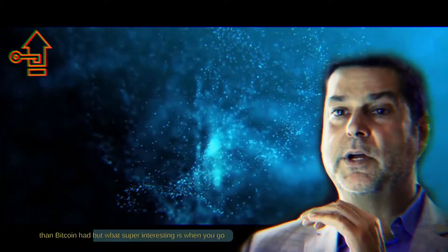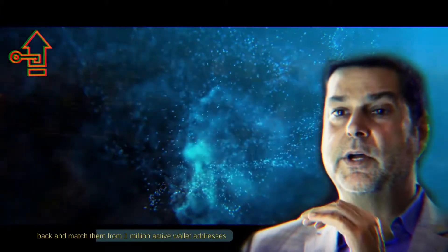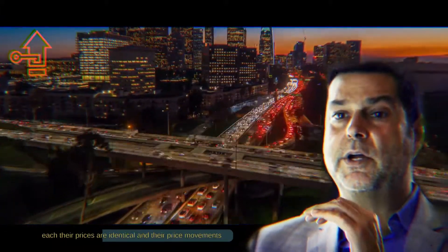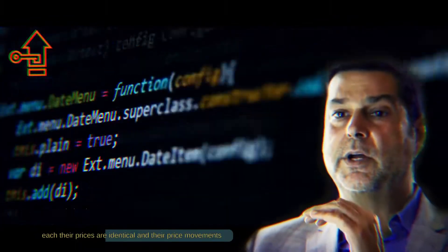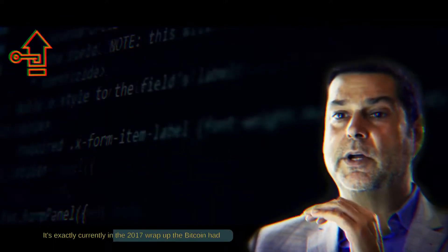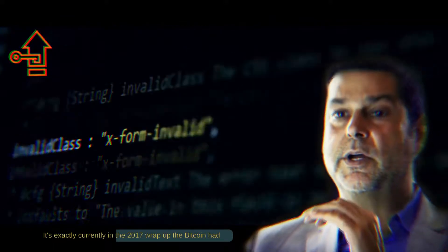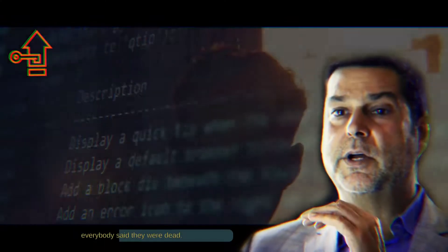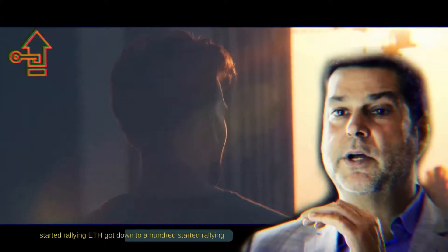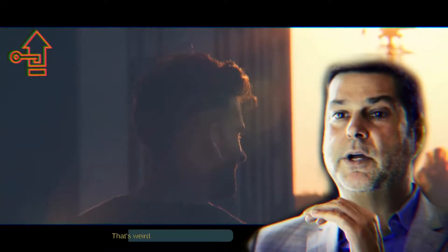But what's super interesting is when you go back and match them from 1 million active wallet addresses each, their prices are identical and their price movements have been identical. It's exactly currently in the 2017 wrap-up that Bitcoin had. Everybody said they were dead, they were worthless. Bitcoin got down to about 100 and started rallying. ETH got down to 100, started rallying. That's weird.